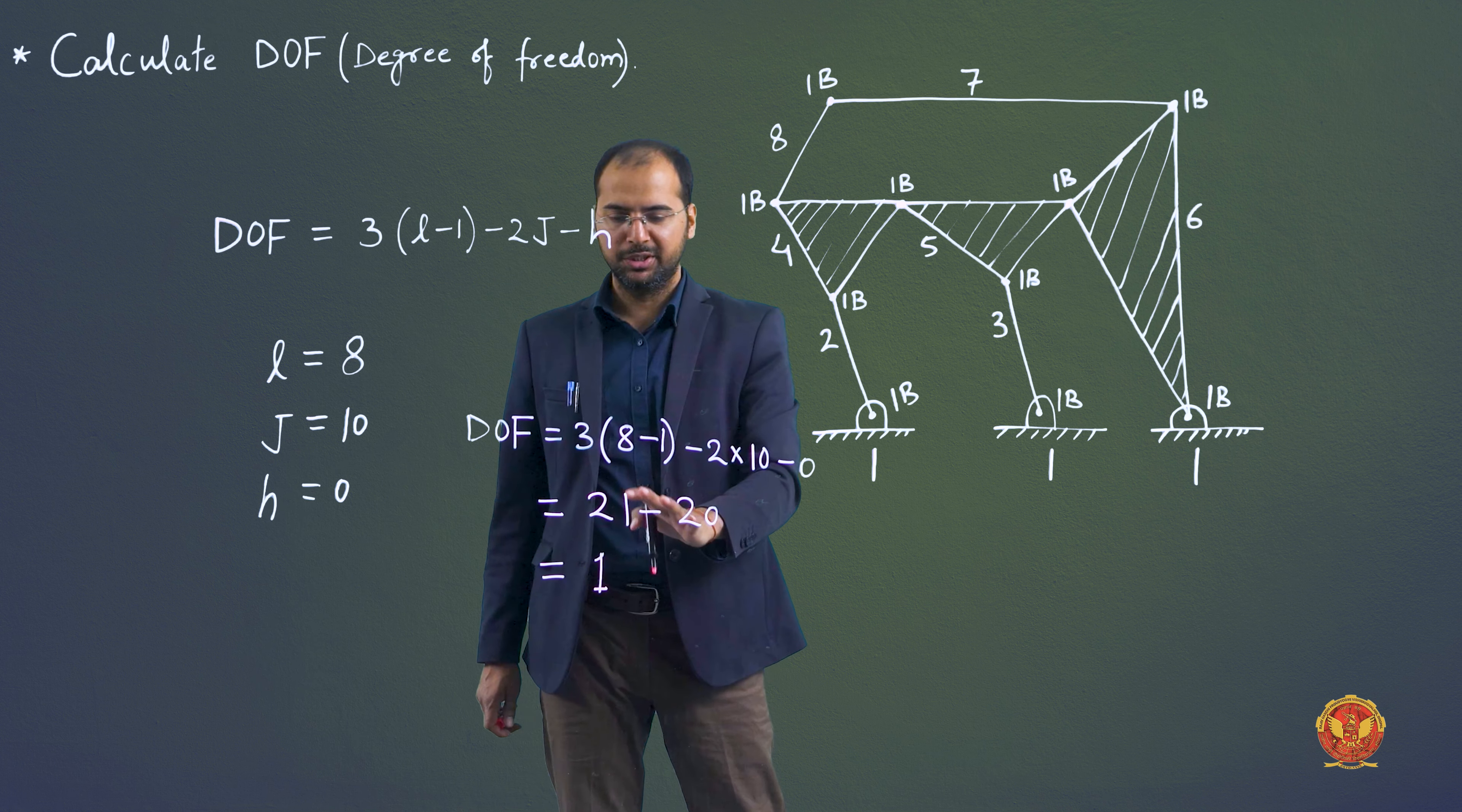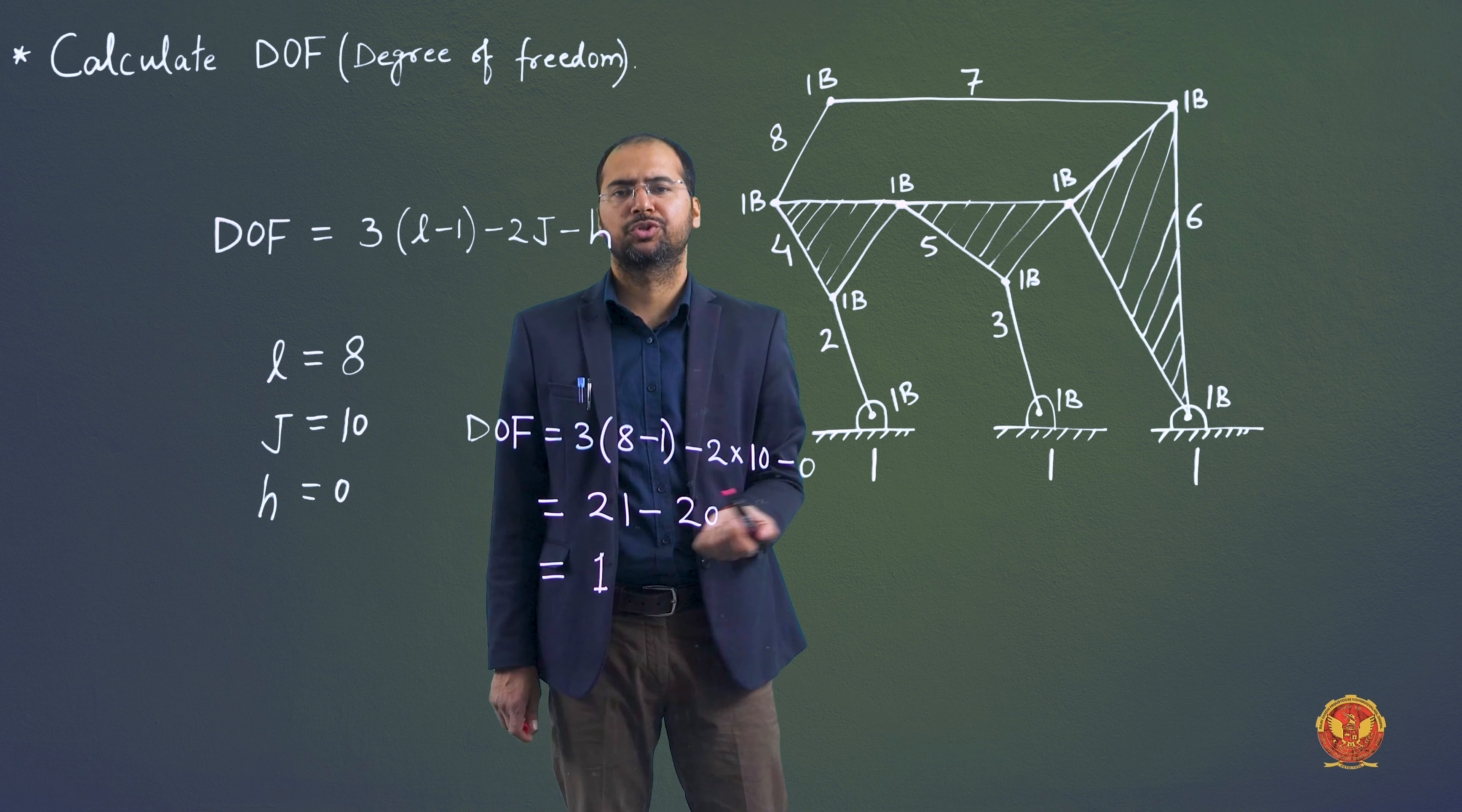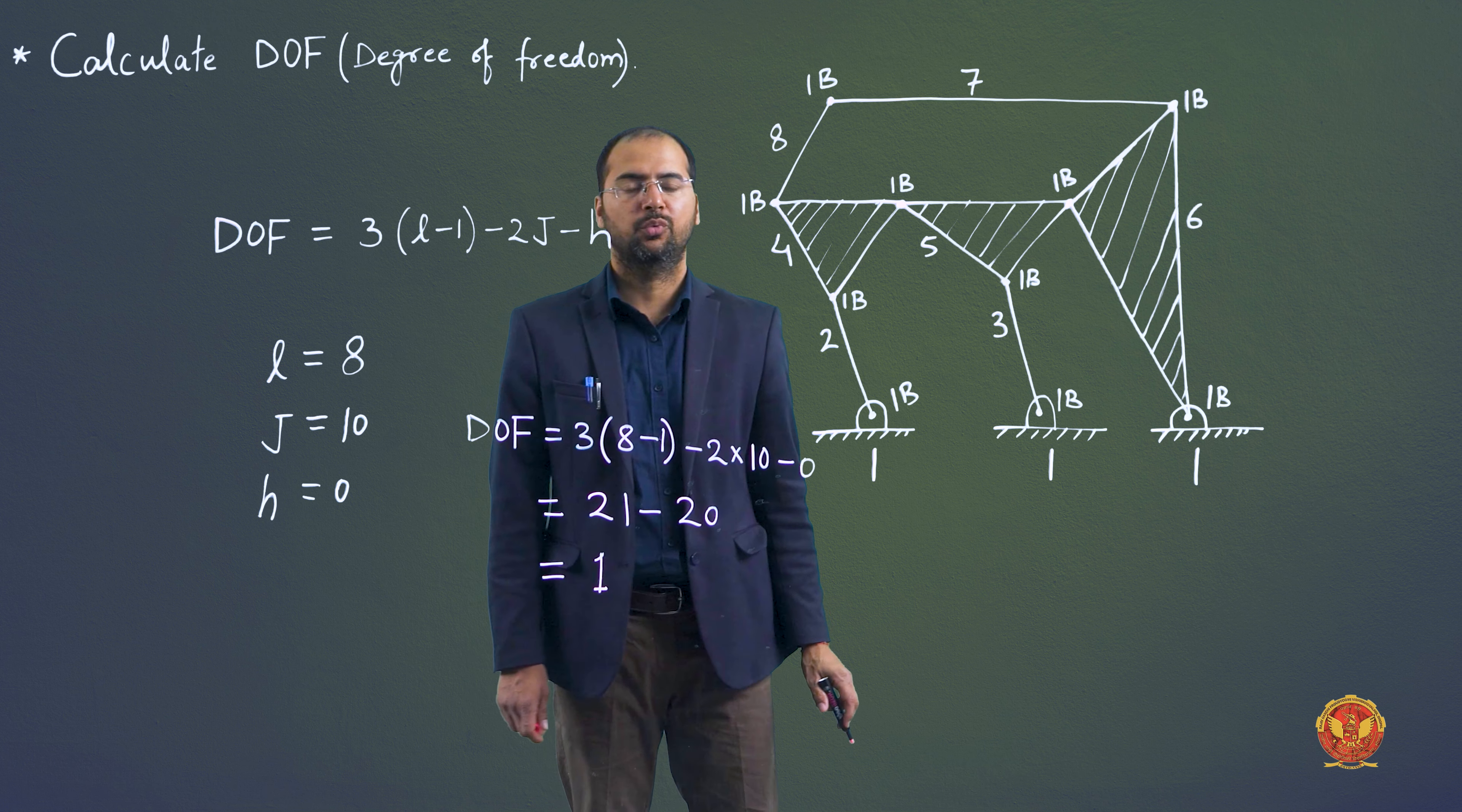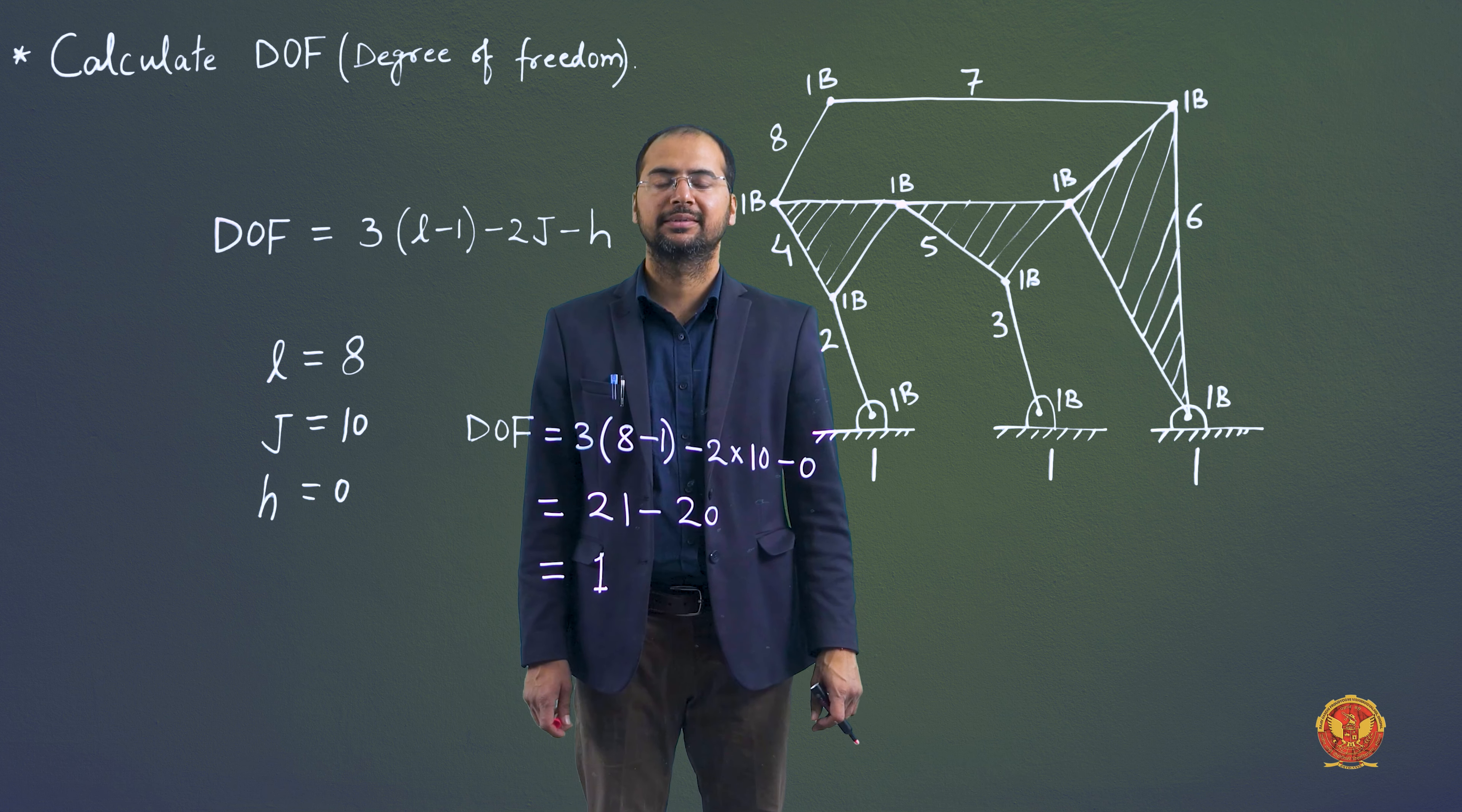In this case, one input motion will be sufficient for constraint motion. So here in this question, we are getting degree of freedom as 1. So that's all for today's class. Thank you.